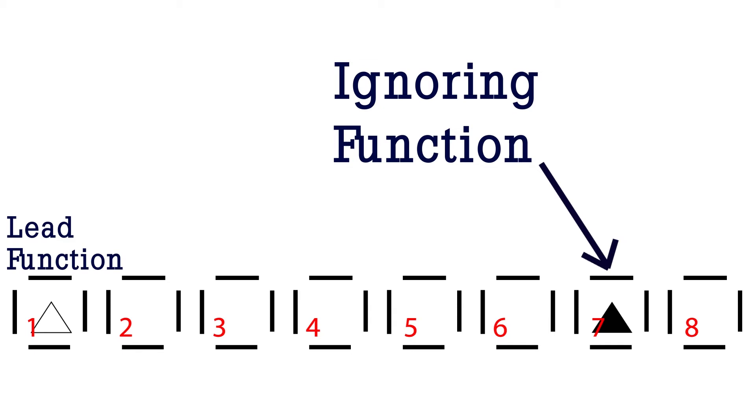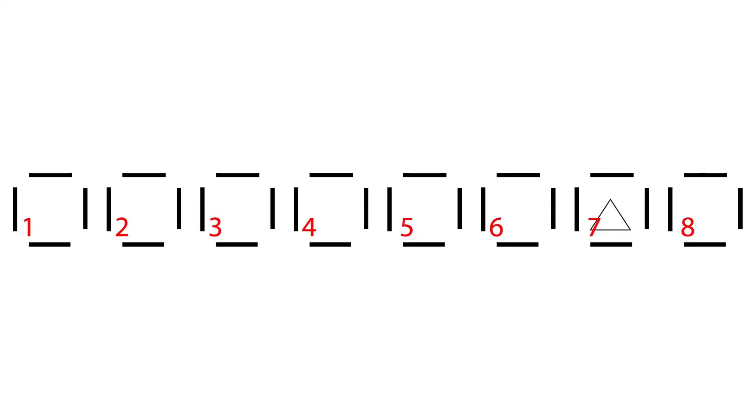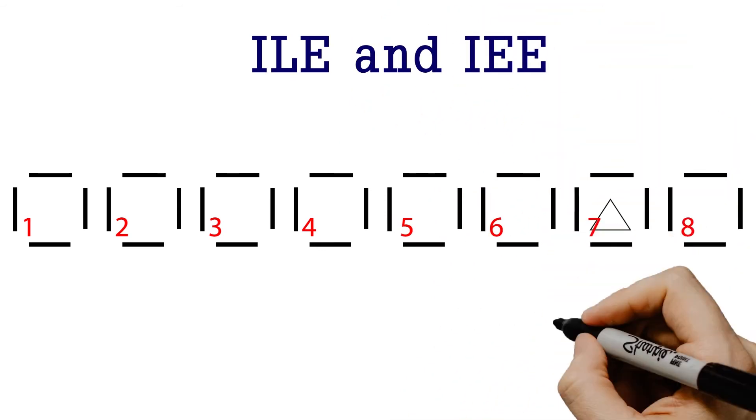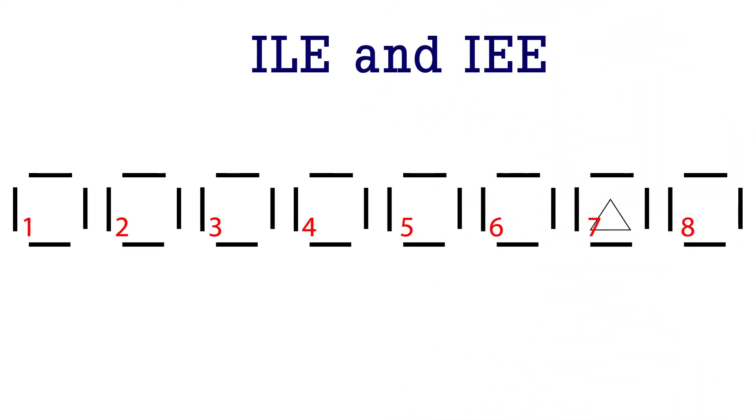Let's take a look at different aspects performing the ignoring function. Ignoring NI considers looking at the essence irrelevant. Since lead NE finds connections and similarities, the disconnected NI concepts are not seen as enlightening.